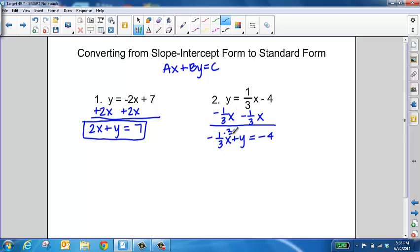This is going to give us negative 1x or negative x plus 3y equals negative 12. This would be our equation in standard form. That's how you convert from slope-intercept to standard form.